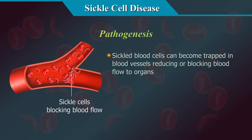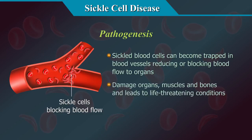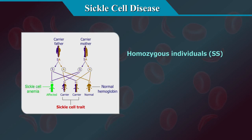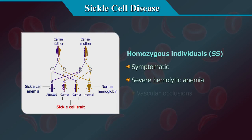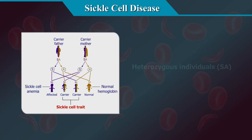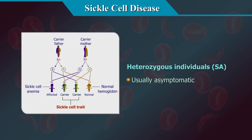Sickled blood cells can become trapped in blood vessels, reducing or blocking blood flow. This can damage organs, muscles, and bones and may lead to life-threatening conditions. Homozygous individuals commonly exhibit symptoms of severe haemolytic anaemia and/or vascular occlusions, whereas heterozygous individuals are usually asymptomatic.